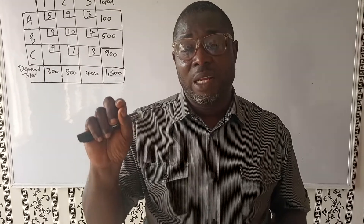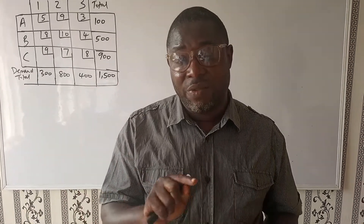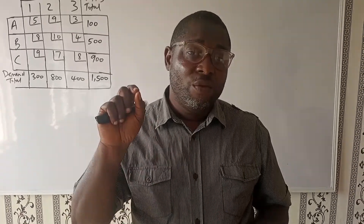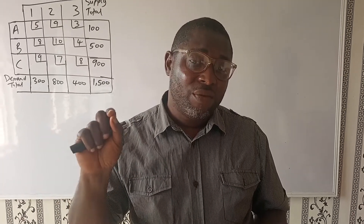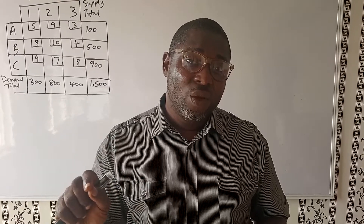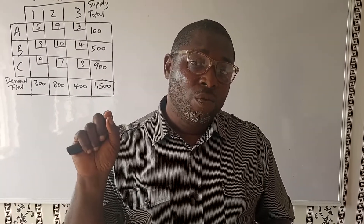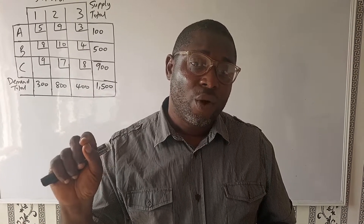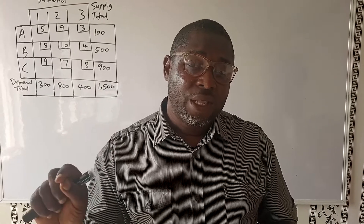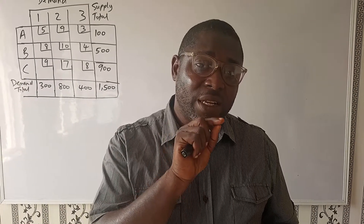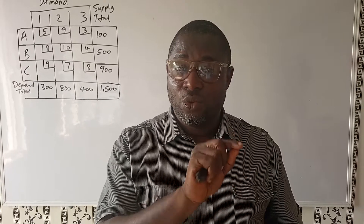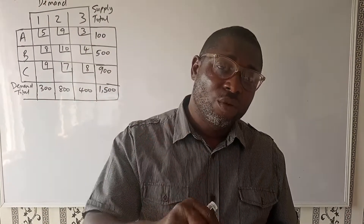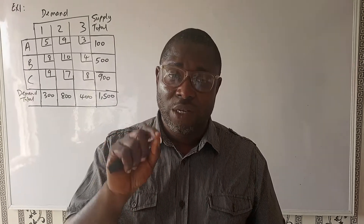— we now identify the highest of these differences from the rows and from the columns. The value that gives us the highest difference will be our focal row or focal column. What you then do is identify the least cost in that row or column and apportion volumes from the supply source or from the demand.